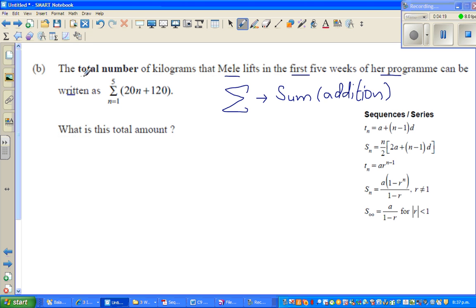The total number of kilograms that Mele lifts in the first five weeks can be given by this formula. So this is sigma, n from 1 to 5, read like this: sigma n from 1 to 5 of 20n + 120.